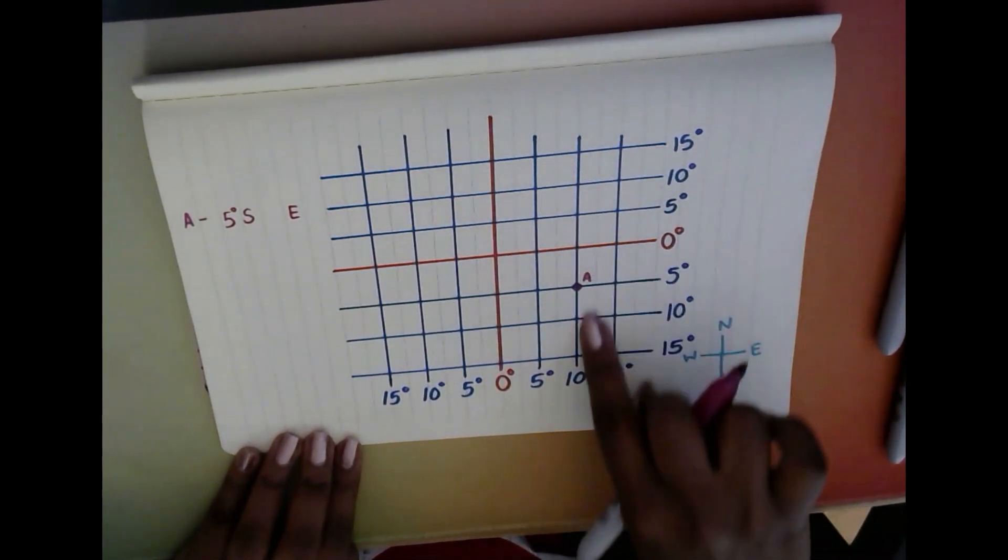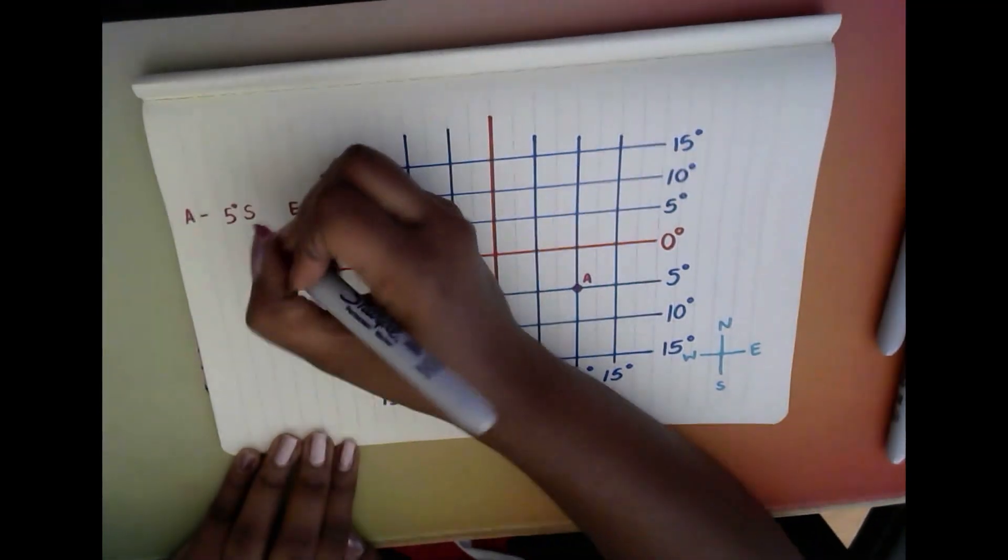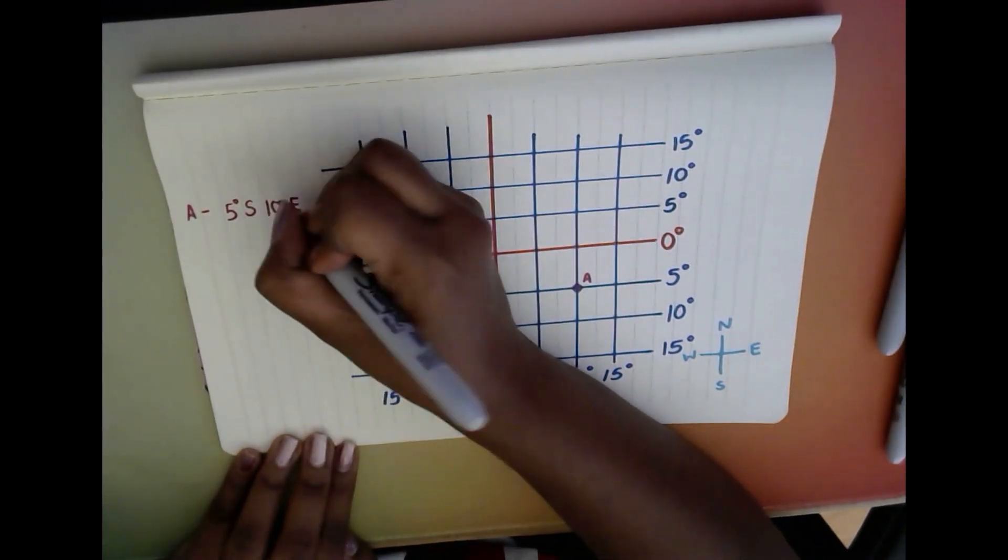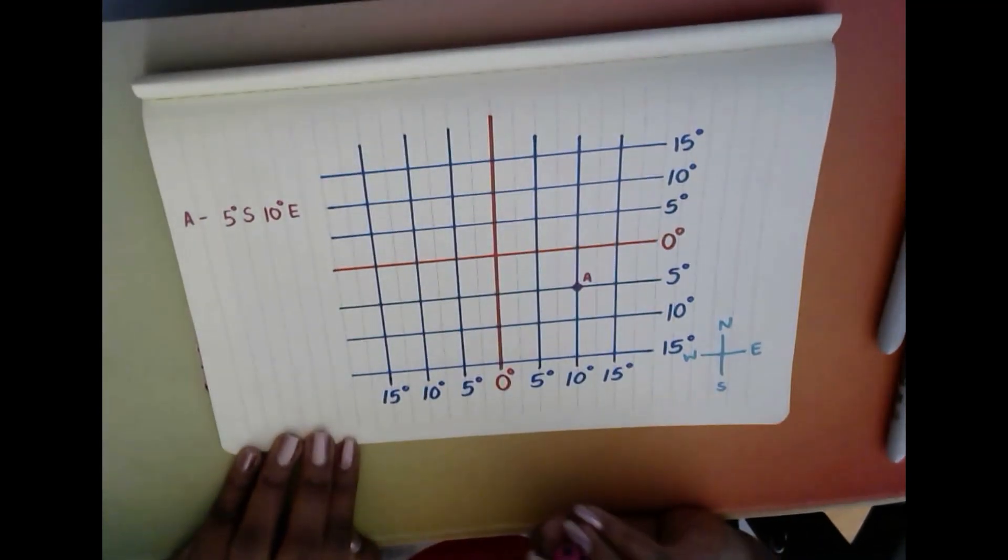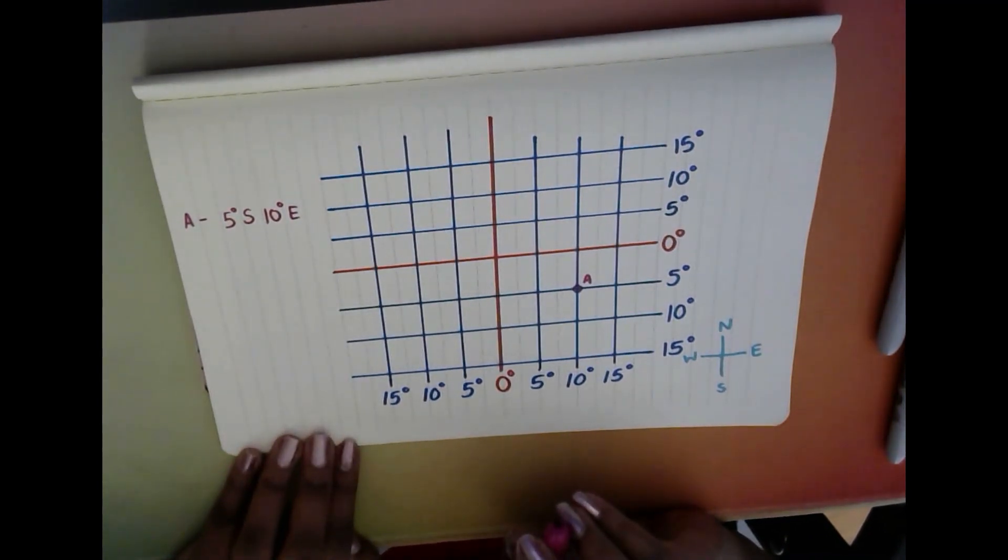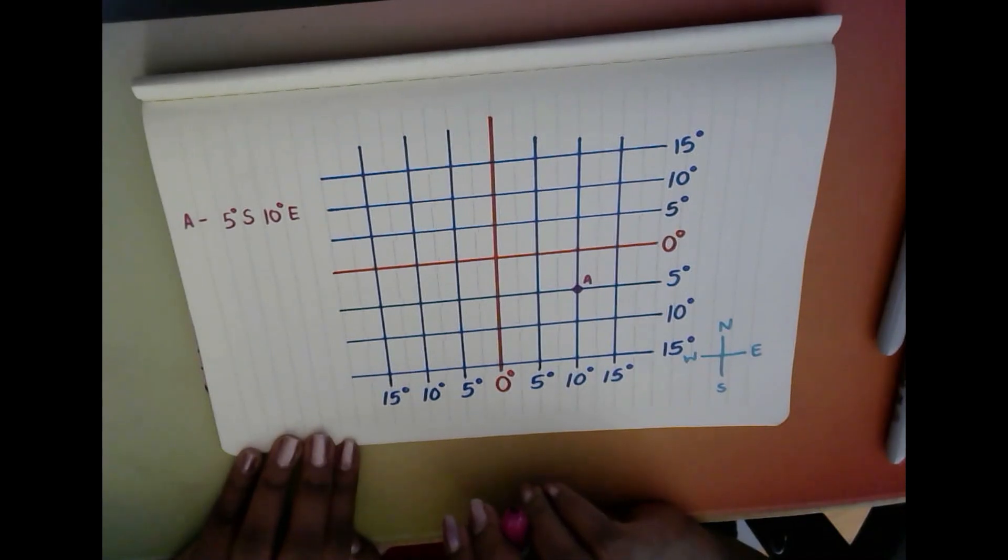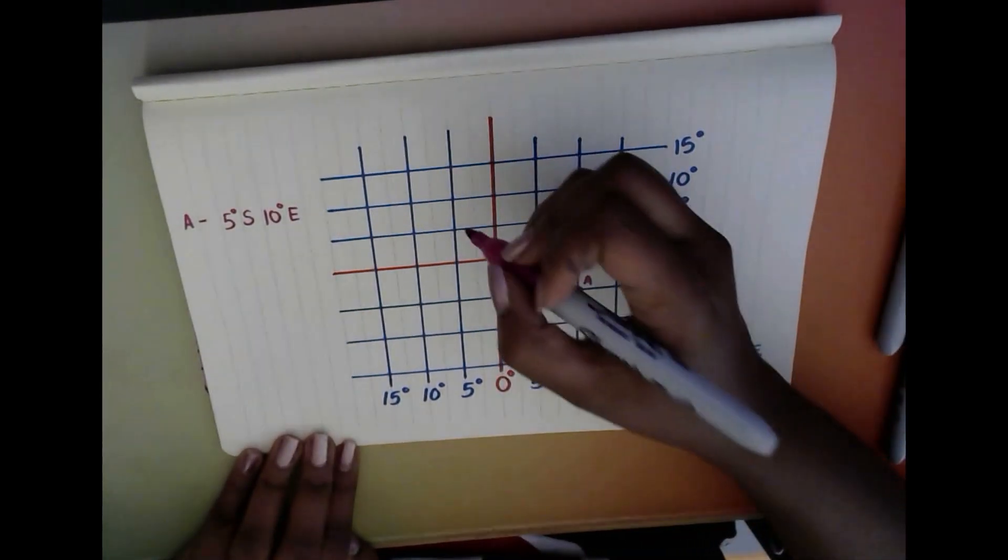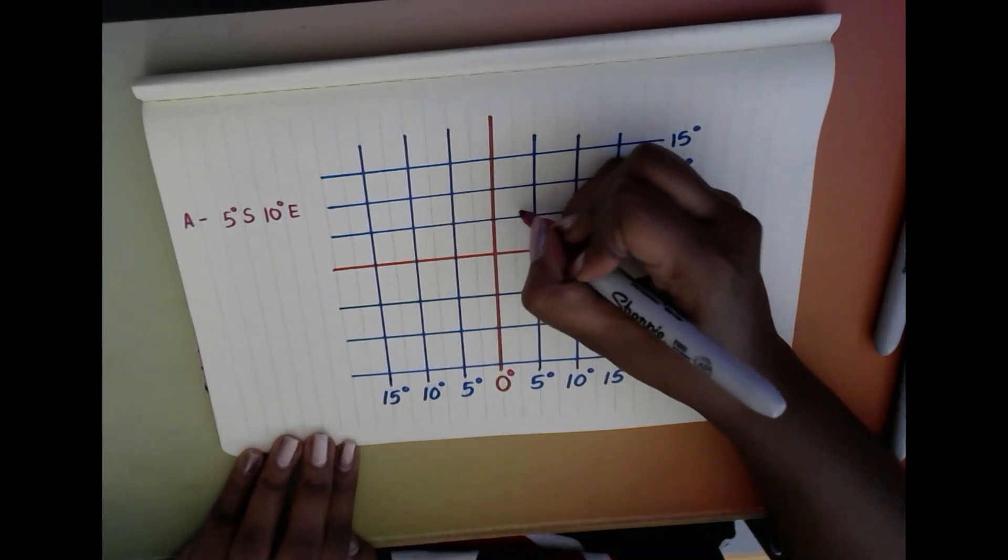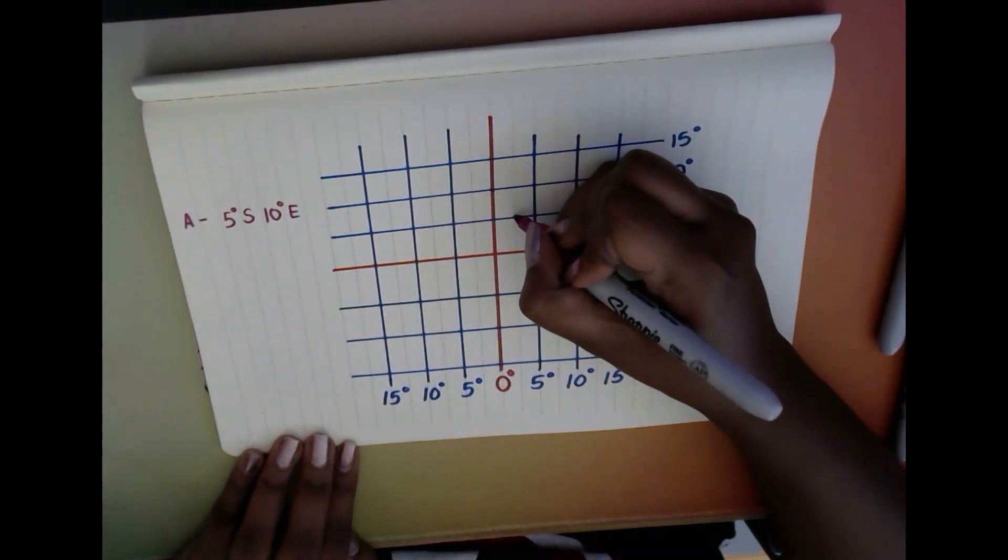And ladies and gentlemen, that is the coordinates of A. A is sitting at five degrees south and 10 degrees east. But let's make it a little more difficult. Let's put another dot and let's put it over there.